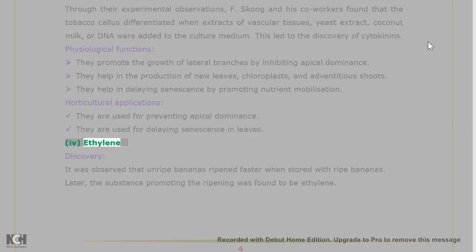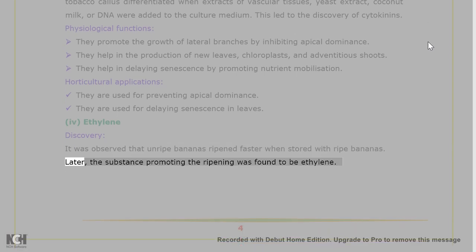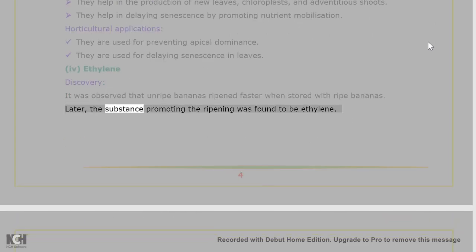4. Ethylene — Discovery: it was observed that unripe bananas ripened faster when stored with ripe bananas. Later, the substance promoting the ripening was found to be ethylene.